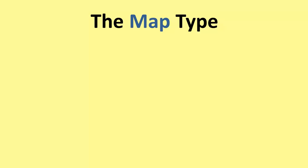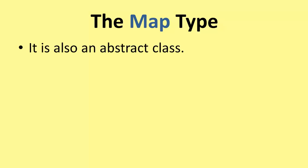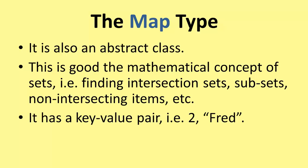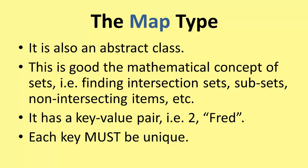The final type is the map type. This is also an abstract class — you have to use it with some other data type. It's very good at the mathematical concept of sets: you can find which items two groups have in common, whether one group is a subset of another, find non-intersecting items, and so on. A map type has a key-value pair — for example, you'd enter something like 2 and FRED. It must have both data types, although the value can be null. Each key must be unique, and this is how it finds a particular item of data.